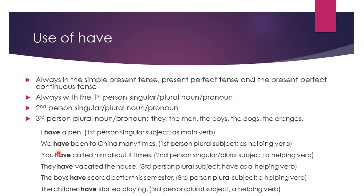'They have vacated' — 'have' is the helping verb, 'vacated' is the main verb. 'The boys have scored better' — 'scored' is the main verb and 'have' is the helping verb. 'The children have started playing' — 'started' is the main verb and 'have' is the helping verb. These last three examples all use third person plural subjects, while the earlier examples covered second person and first person subjects respectively.